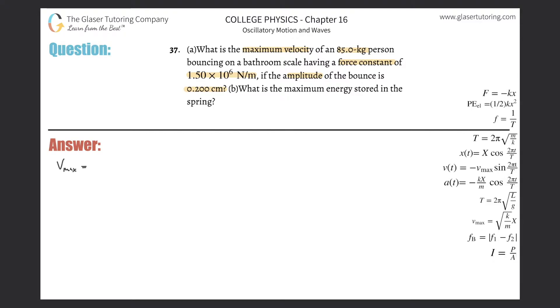They told us the mass is 85 kilograms. They also told us the force constant k is 1.5 times 10 to the 6th. And they told us the amplitude, which I'll label as capital A, is 0.2 centimeters. I'm going to convert that right away: 0.2 times 10 to the minus 2 meters.